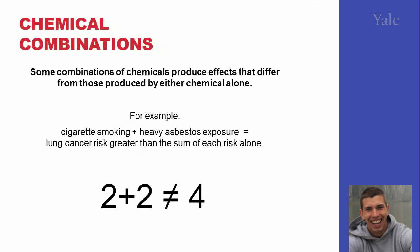Obviously, in the real world, we are exposed to many chemical combinations at the same time. Everything is a chemical and in some rate or another, it is likely to enter your body. However, different combinations of chemicals can have very different effects. For example, cigarette smoke and heavy asbestos exposure multiply the risk of cancer. And in this case, chemical exposure does not work like math — 2 plus 2 isn't equal to 4.